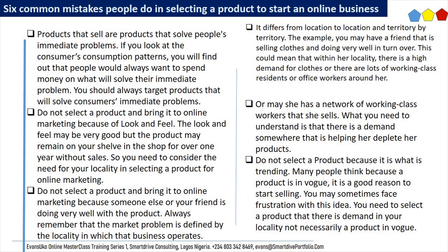Mistake 5: It differs from location to location and territory by territory. For example, you may have a friend that is selling clothes and doing very well in turnover. This could mean that within her locality there is a high demand for clothes, or there are lots of working-class residents or office workers around her. Do not select a product because someone else or your friend is doing very well with it. Always remember that the market problem is defined by the locality in which that business operates. What you need to understand is that there is a demand somewhere that is helping her deplete her products.